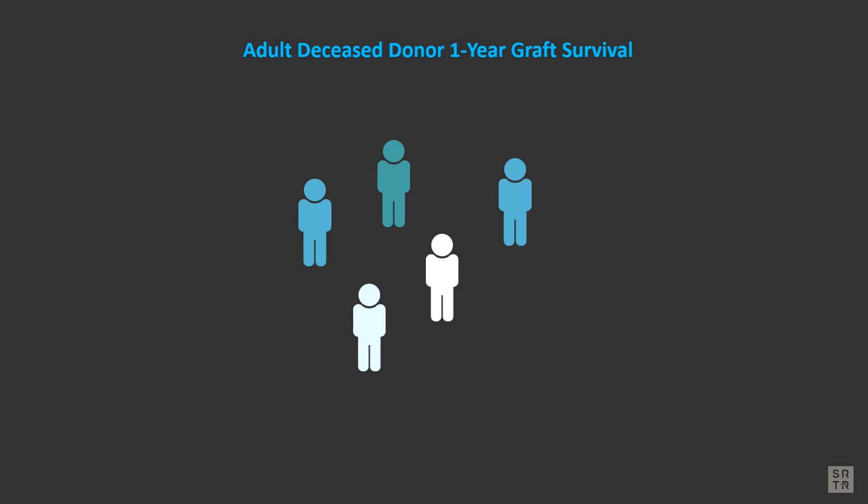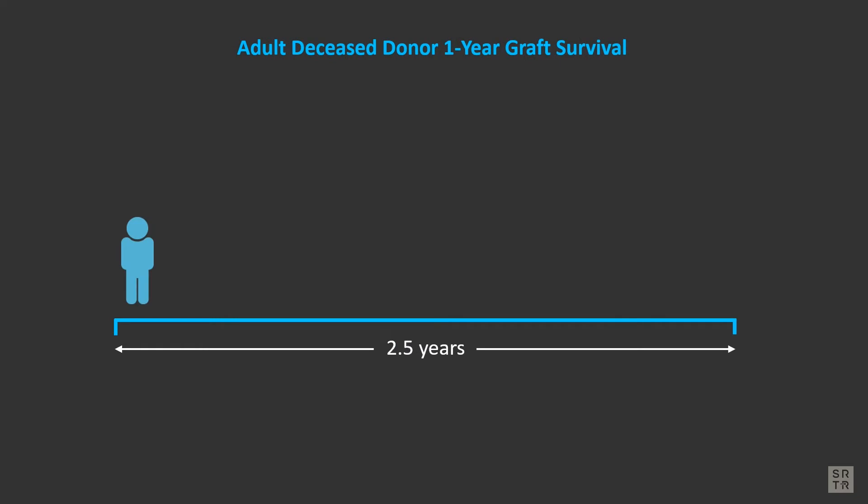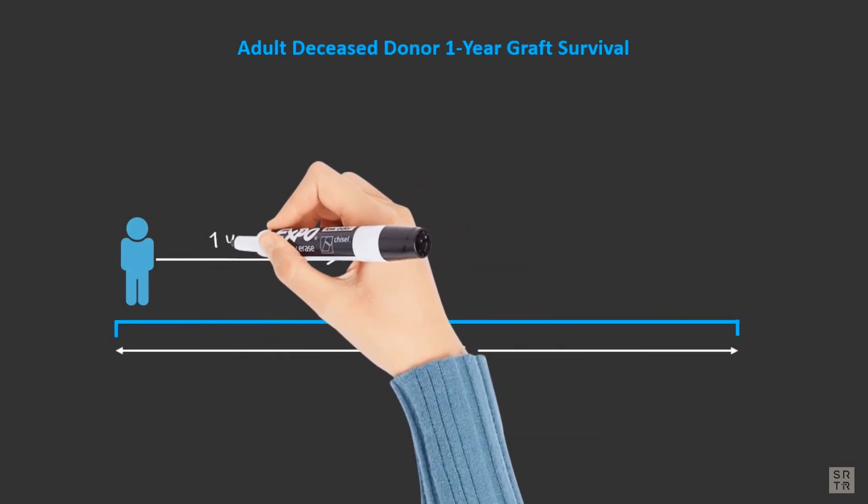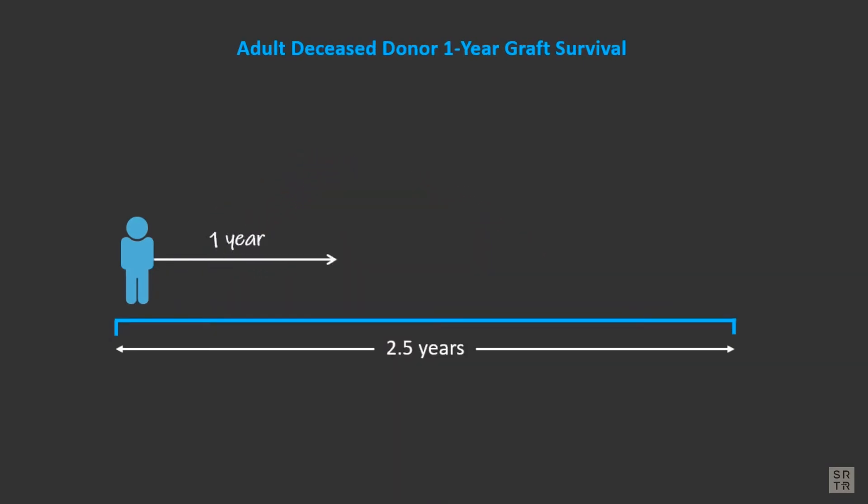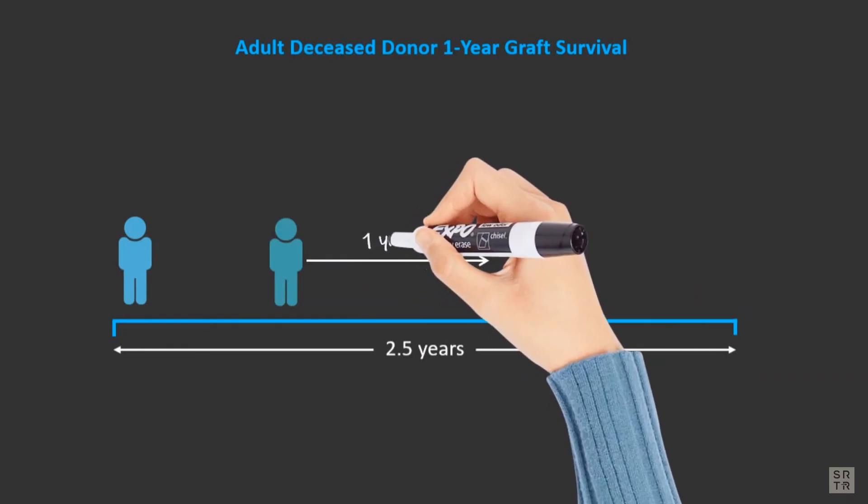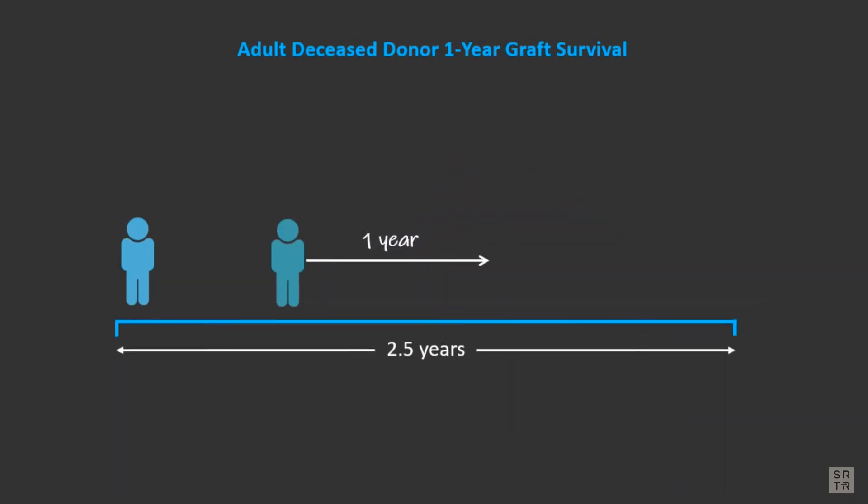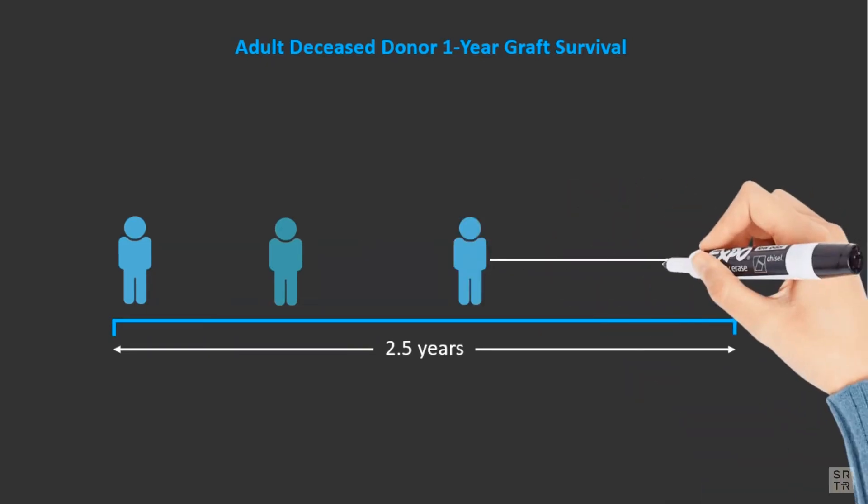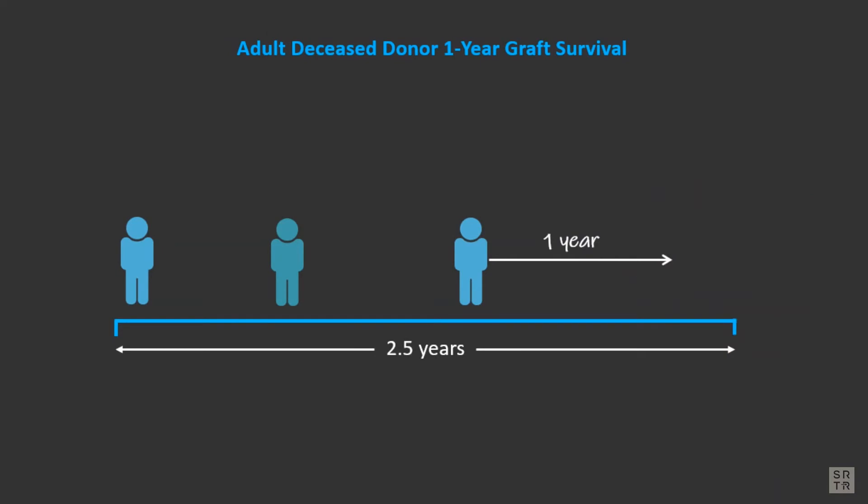The Kaplan-Meier survival estimator is based on the number of patients at risk and the number of events that occur. Follow-up for all patients in the cohort starts on the day of transplant. One way to imagine the analysis is to imagine that all the patients in the cohort were transplanted on the same day and followed for one year. Though we know that patients are transplanted on different days, and this is why patients transplanted in the later part of the cohort have less follow-up time. Therefore, all patients are at risk on the first day of the year of follow-up.